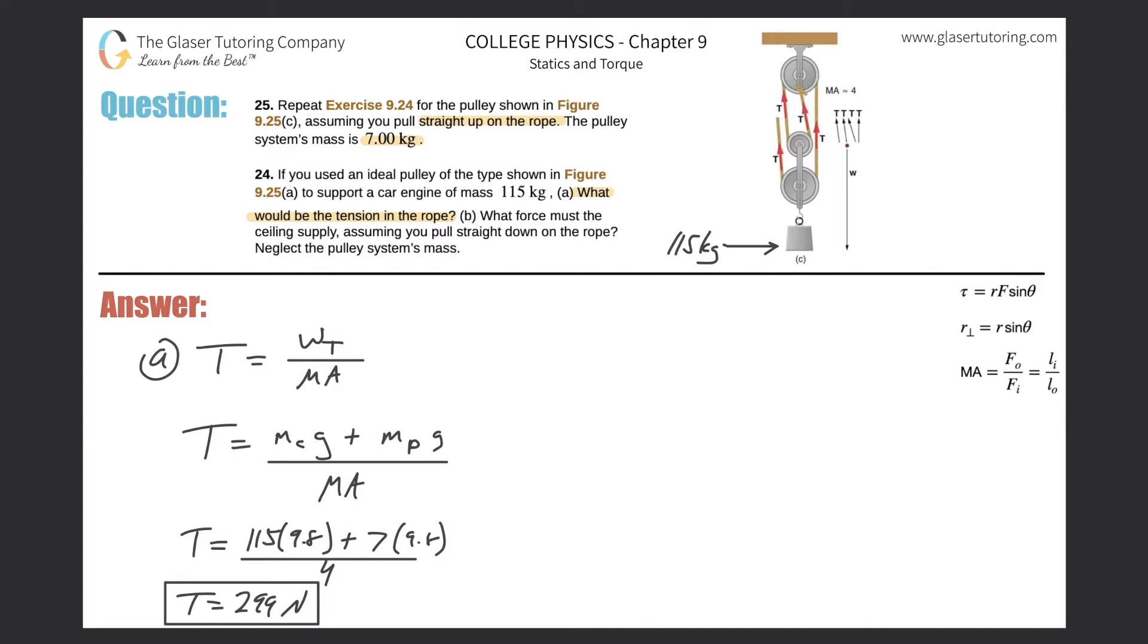Now let's take care of letter B. So letter B, let's highlight it. It says, now what force must the ceiling supply? Well, it's not assuming you pull straight down on the rope anymore, because now you're pulling straight up on the rope. So we still got to figure out the force that the ceiling is exhibiting. How do we go about calculating this?